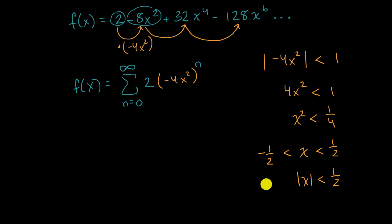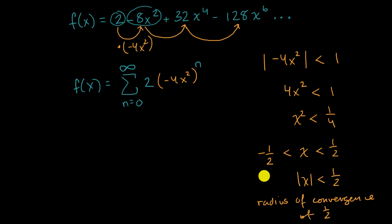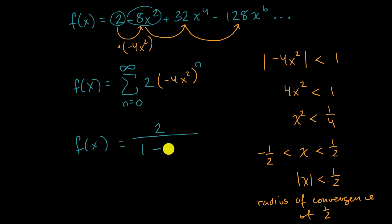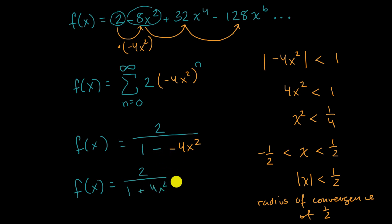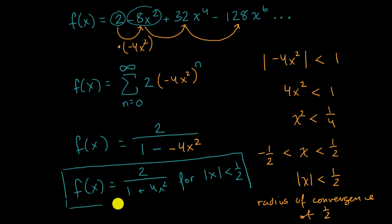We've defined an interval over which this infinite geometric series converges — a radius of convergence of one half, going one half above and one half below zero. The sum of an infinite geometric series equals the first term over one minus the common ratio, so f of x equals two over one minus negative four x squared, which simplifies to two over one plus four x squared, for the absolute value of x less than one half. And we're done.